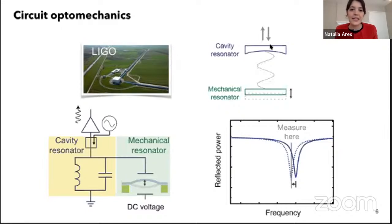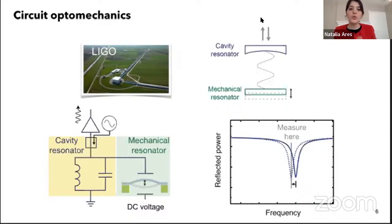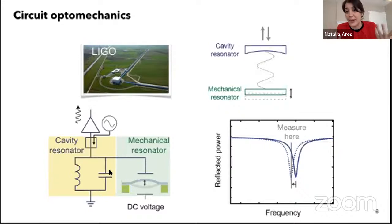That approach is cavity optomechanics: radiation is trapped in a cavity, some leaks out, and if one side of the cavity is the mechanical resonator, when it moves, the radiation inside the cavity experiences changes we can measure outside. We don't do optical cavity optomechanics because we want to do everything on chip. Instead, we use circuit optomechanics — an electrical cavity formed by an inductor and a capacitor, which has a resonance frequency.